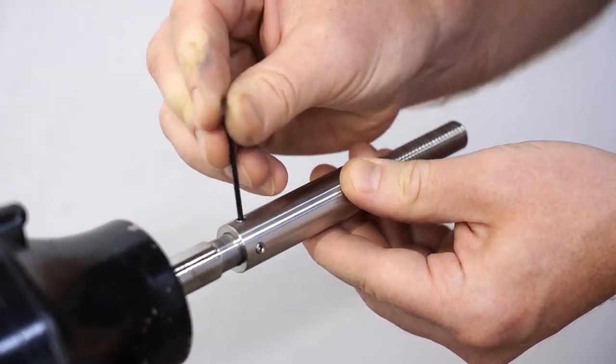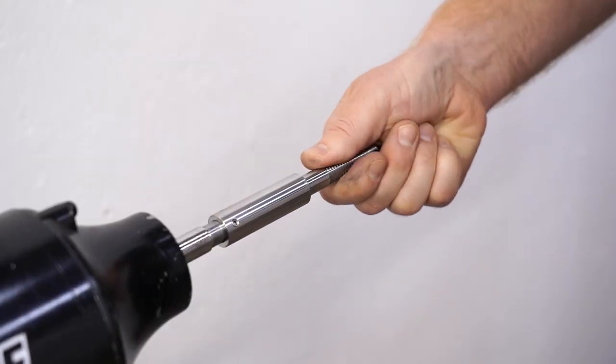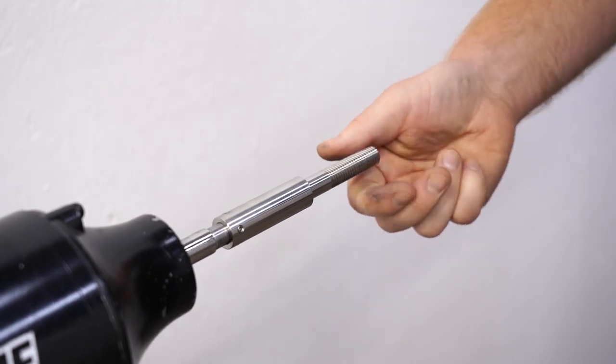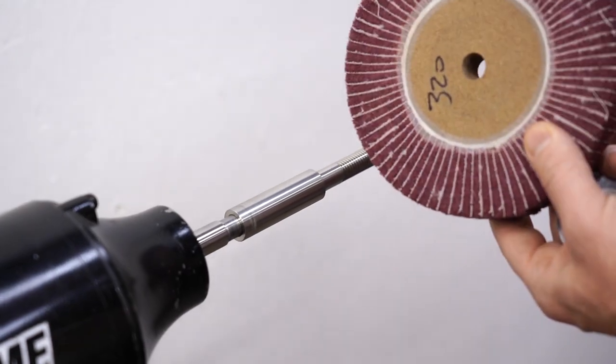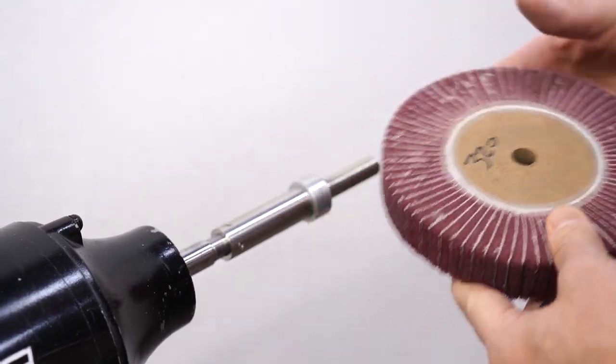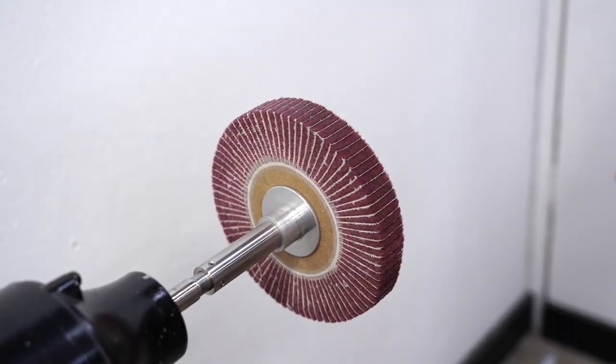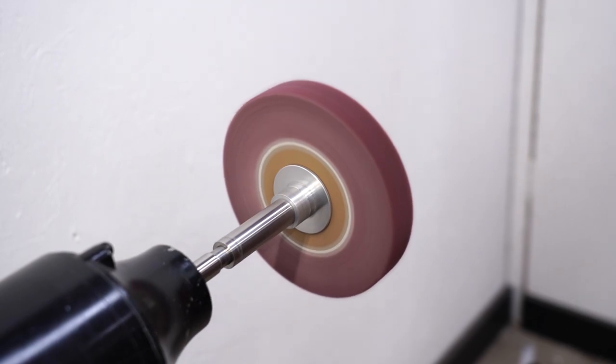And tighten the set screws in the same procedure. Now with that Teflon tape, it is nice and tight on the shaft. Let's go ahead and spin it up. I'm going to mount a heavier wheel on here, this flap wheel, and see if there's any vibration. Nice and smooth. It's not walking on the concrete at all.